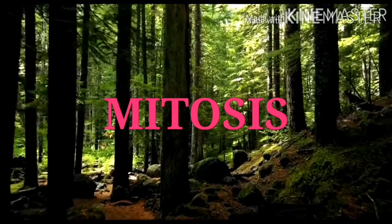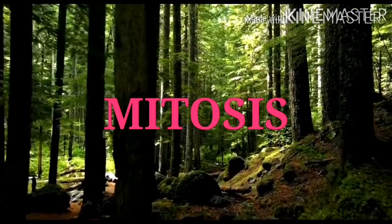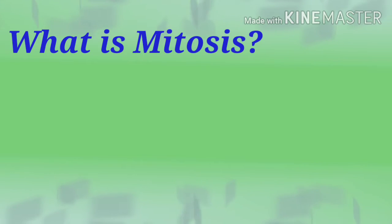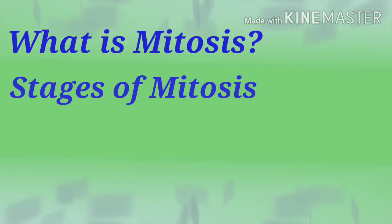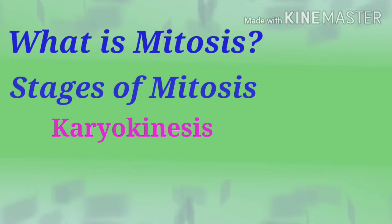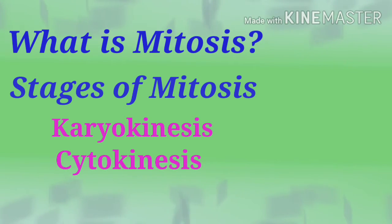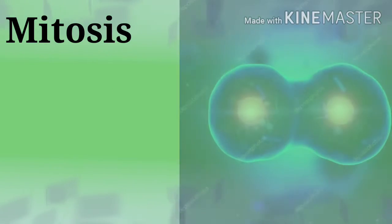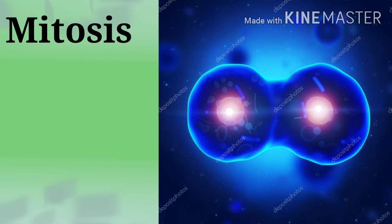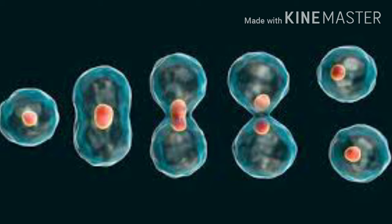In this video we are going to learn about mitosis. Mitosis includes division of the nucleus, called karyokinesis, and division of the cytoplasm, called cytokinesis. Mitosis is a process where a single cell divides into two identical daughter cells. During mitosis, one cell divides once to form two identical cells.